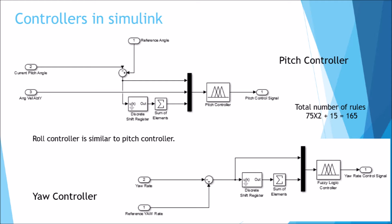There are a total of 75 rules in pitch controller. Roll controller is similar to pitch controller. The yaw controller is also similar to pitch controller in operation. It controls the angular velocity about z-axis, so it receives yaw rate and reference yaw rate as input.